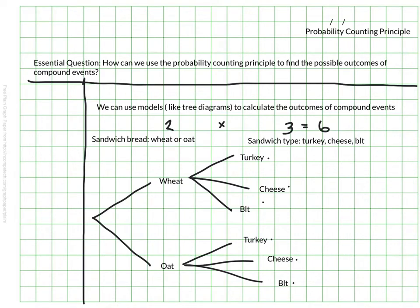This is known as the probability counting principle. The counting principle tells us that we can multiply the number of outcomes for each part of our compound event together, and that will tell us the total number of outcomes possible. So two times three gave us six.